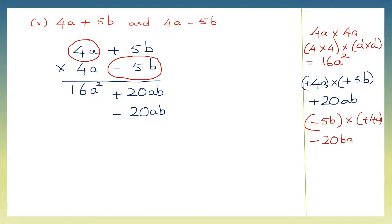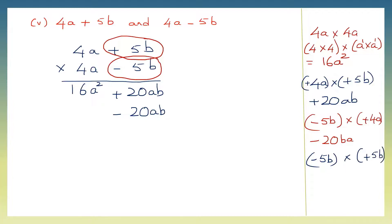Now we multiply minus 5b and plus 5b. Minus 5b into plus 5b: first multiply the signs — minus into plus is minus. Then the numbers: 5 fives are 25. Then the literals: b into b — this is 1 here and 1 there, so b into b becomes b squared. So here we have minus 25b squared.